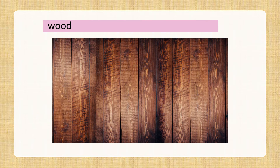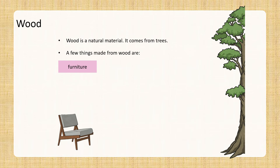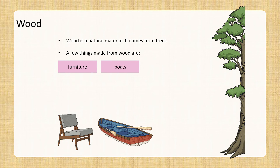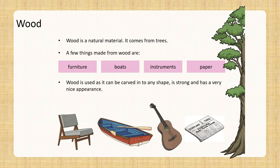Wood. Could you think of three objects made of wood? Wood is a natural material. It comes from trees. A few things that are made from wood are furniture, boats, instruments, and paper. Wood is used as it can be carved into any shape. It is strong and has a very nice appearance.